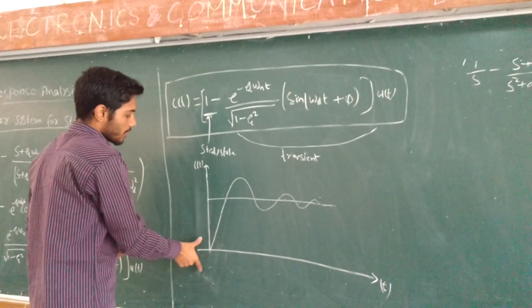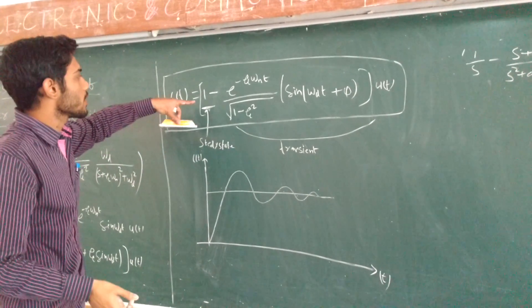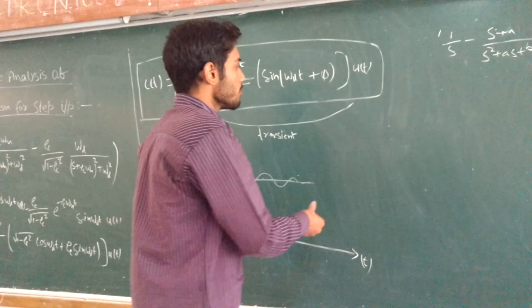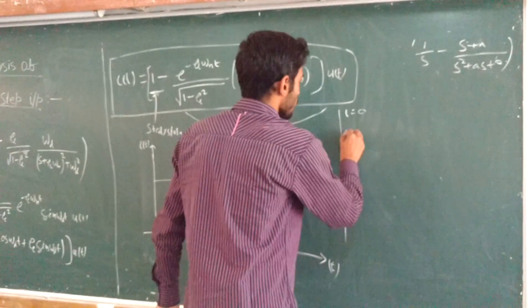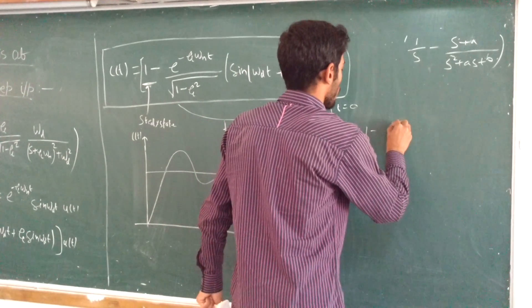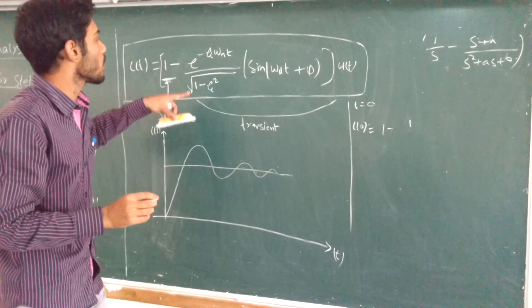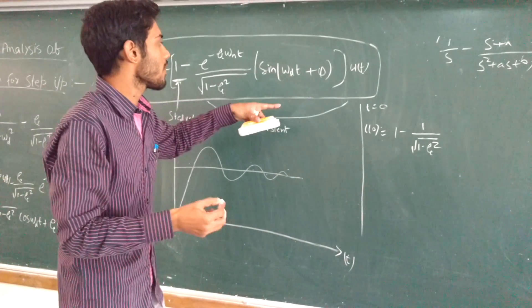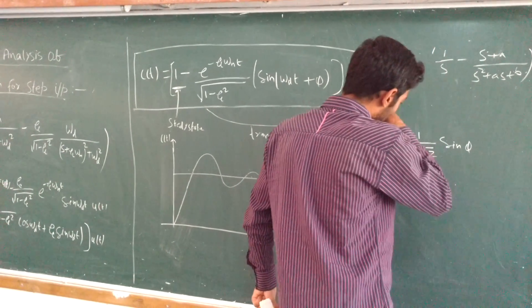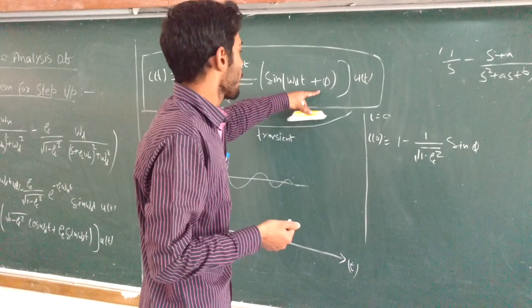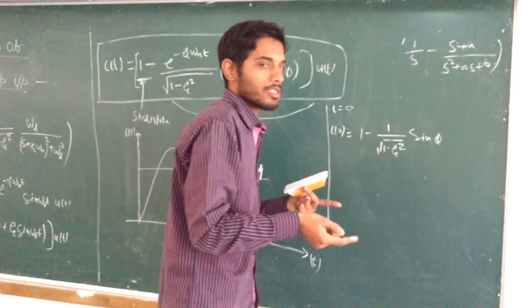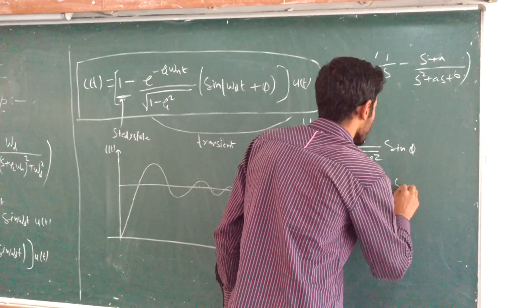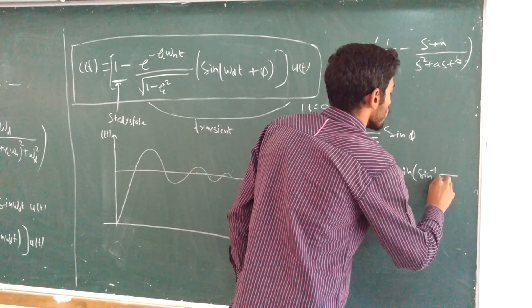At t = 0, we start from 0. If we put t = 0, c(0) = 1 − (1/√(1−ξ²)) · sin(φ). We know that φ = sin⁻¹(√(1−ξ²)), so sin(sin⁻¹(√(1−ξ²))) = √(1−ξ²). Therefore c(0) = 1 − (1/√(1−ξ²)) · √(1−ξ²) = 1 − 1 = 0. So at t = 0, the response starts from 0.